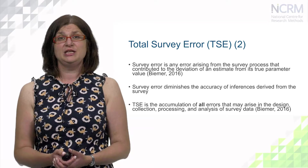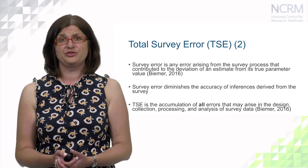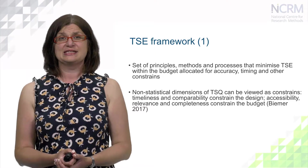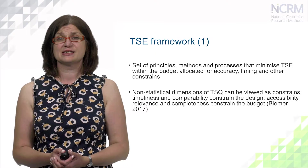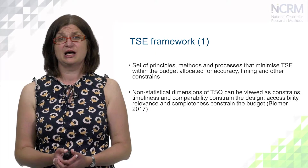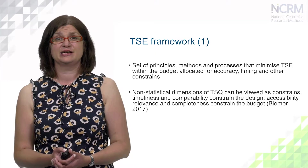Survey error diminishes the accuracy of inferences derived from the survey, and this is very important and dangerous when results are produced and published. Total survey error is the accumulation of all errors that may arise in the design, collection, processing and analysis of survey data. The total survey error framework is a set of principles, methods and processes that help to minimize total survey error within the budgets allocated for accuracy, timing and other constraints.